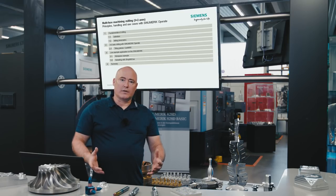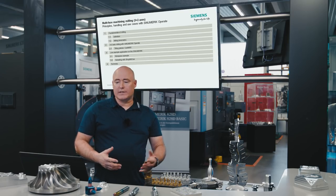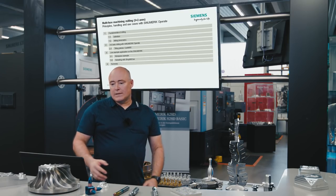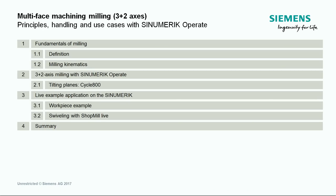We kick off today by explaining the basics of milling and clarifying some technical terms. This is followed by 3 plus 2 milling with CINEMERIC OPERATE, in particular the swivel plane function with the CYCLE 800. And then a practical example live on the machine.